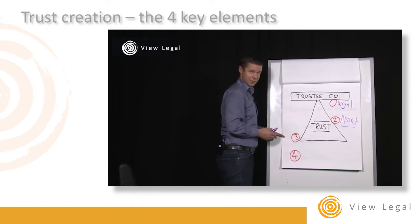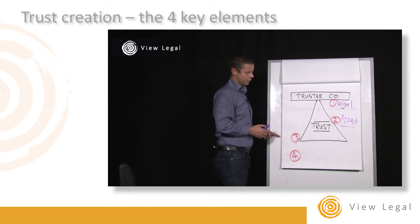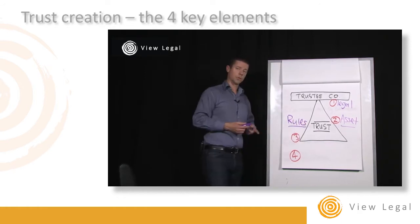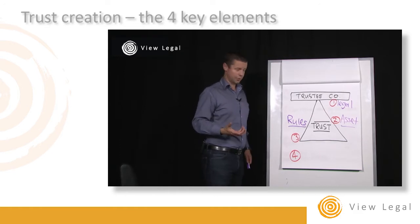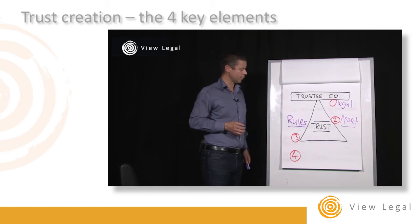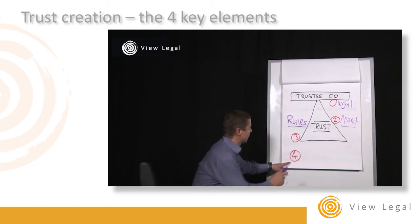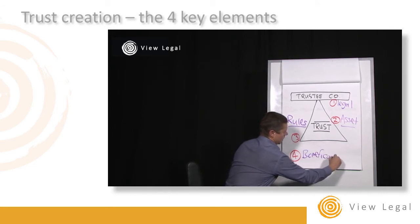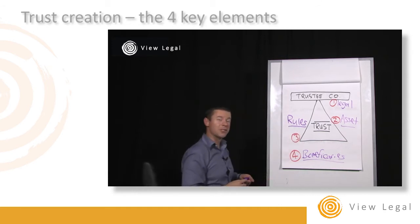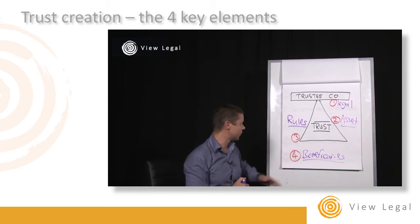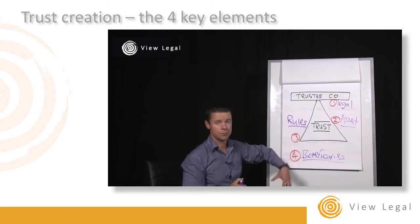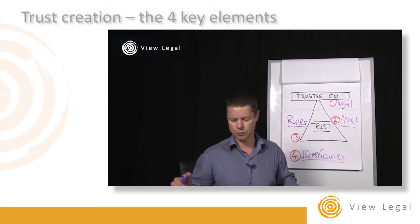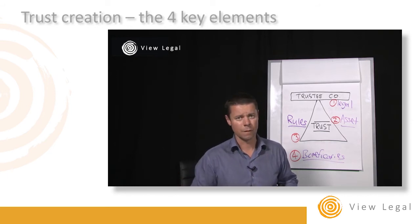Principle two is that you've got some assets sitting inside the trust structure. Number three is that you've got some rules — invariably those rules will be set out in a trust deed, a trust instrument, or some sort of written document to articulate what those rules are. And number four is that you've actually got someone to benefit from the trust — some beneficiaries at the bottom of the structure to receive entitlements, whether income during the life of the trust or capital distributions, either interim or on the final vesting.